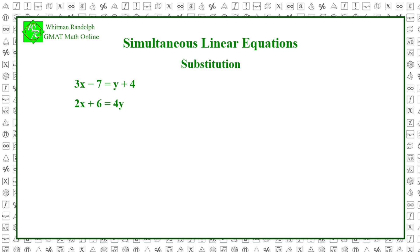Solution method 1 is substitution. In this approach, we first solve one equation for one variable in terms of the other variable. In this case, we'll solve the first equation for y in terms of x. 3x minus 7 equals y plus 4. So 3x minus 7 minus 4 equals y plus 4 minus 4, and 3x minus 11 equals y.